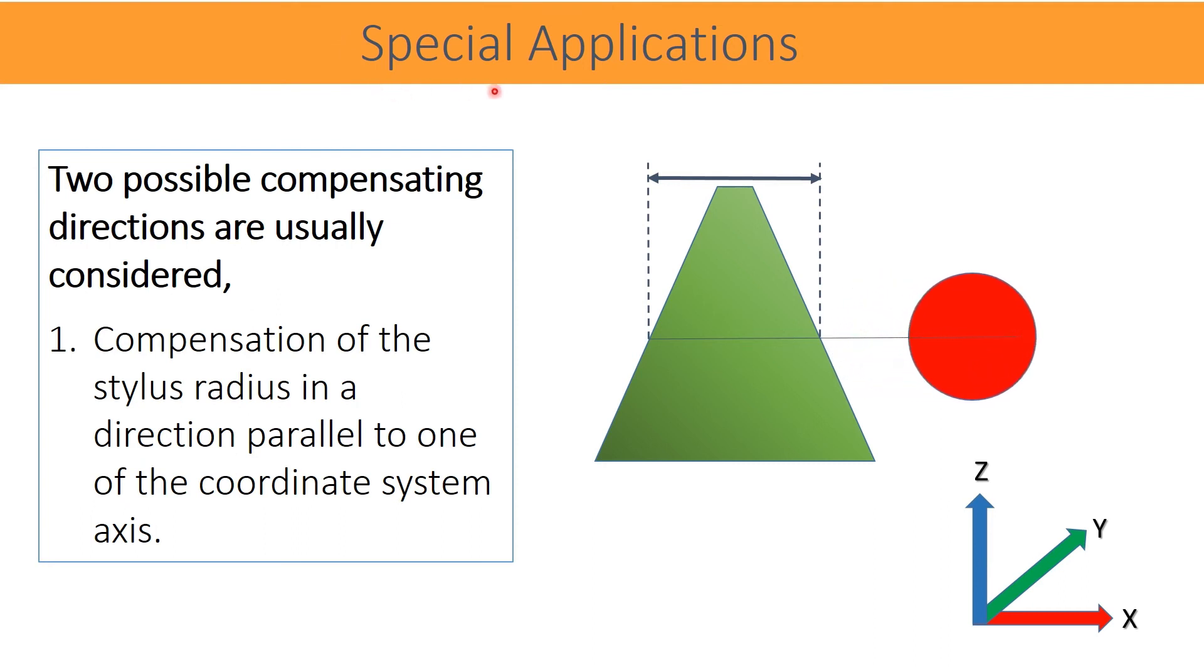There are a few special cases where single point radius compensation is not possible even applying the coordinate system axis direction. One of those cases is described here. Suppose we want to measure a diameter on a cone surface at an exact given distance from the top cone surface. After making the part alignment or setting a coordinate system and making an origin to the top surface, we can bring down the stylus at the exact dimension where the diameter is to be probed.